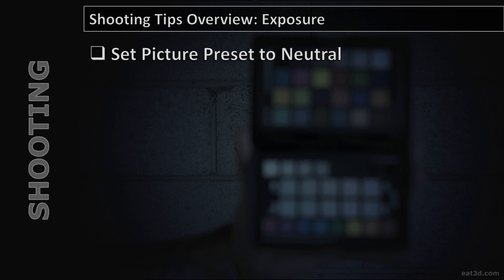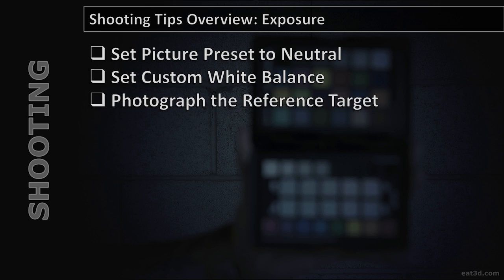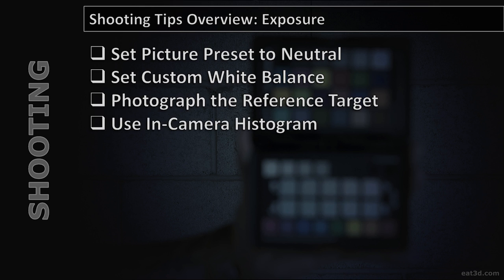A few shooting tips: set the picture preset on your camera to neutral — don't use landscape or vivid presets, you want as close to a raw image as possible. Set a custom white balance using the gray reference card on the back of the matrix. Then photograph the reference target to get your exposure, using the in-camera histogram to make sure you're not clipping on either end, because when we create profiles from a reference image of this color checker target, we need to make sure nothing is clipped — otherwise it won't create the profile correctly.